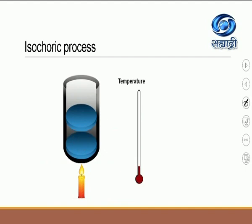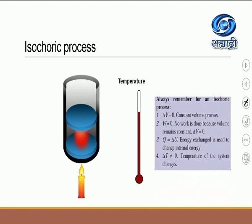Now observe the animation. The piston does not move, so the volume of the system remains constant. The temperature changes, and also the pressure of the system changes. Summary of isochoric process: delta V equals 0 (constant volume); W equals 0, no work is done; Q equals delta U, energy exchange is used to increase the internal energy; delta T is not equal to 0, temperature of the system changes.